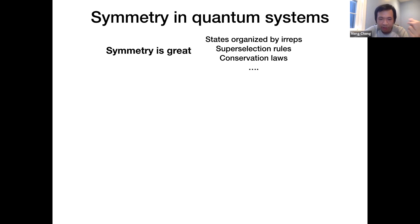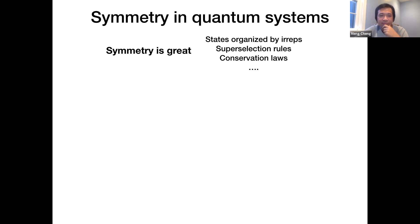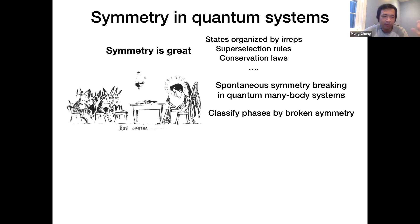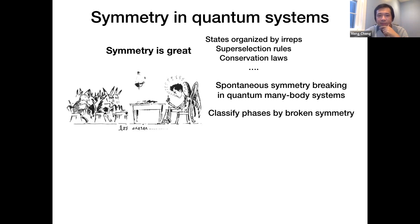When it comes to a many-body system, we encounter a new phenomenon: the symmetry can be spontaneously broken. What that means is that the ground state of the system does not have all the symmetries of the microscopic interactions or the Hamiltonian. There is a certain kind of ordering in the ground state which breaks the symmetries of the underlying interactions. So a large part of condensed matter physics is about the study of various symmetry-breaking phenomena. Disorder here does not mean there are impurities or defects — it just means lack of ordering.